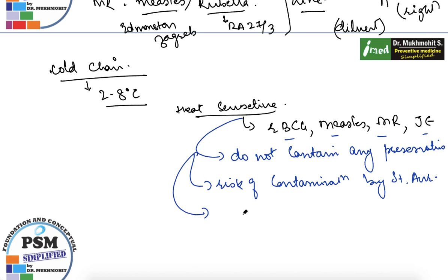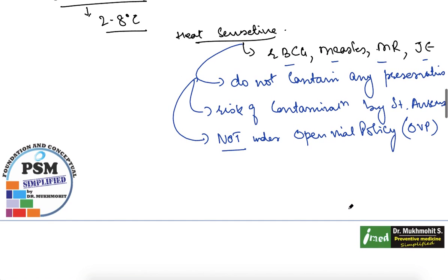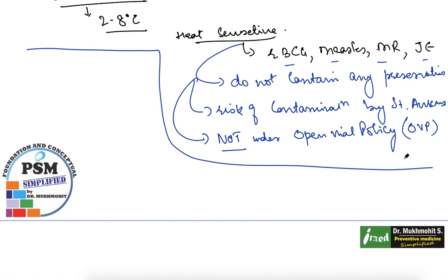Because of the contamination risk from Staphylococcus aureus and the absence of preservatives, these vaccines — reconstituted BCG, measles, and MR vaccines — are not under the open vial policy. They are heat-sensitive vaccines. The open vial policy is an important concept to understand.